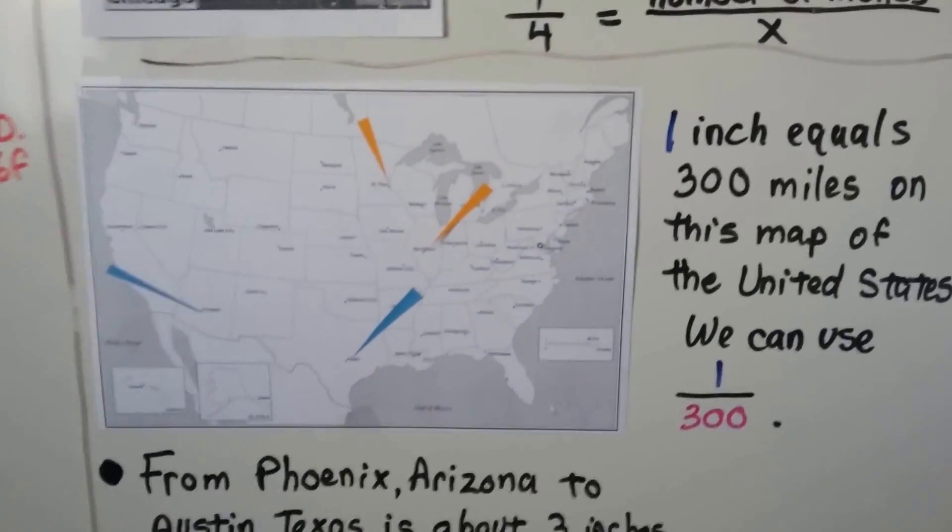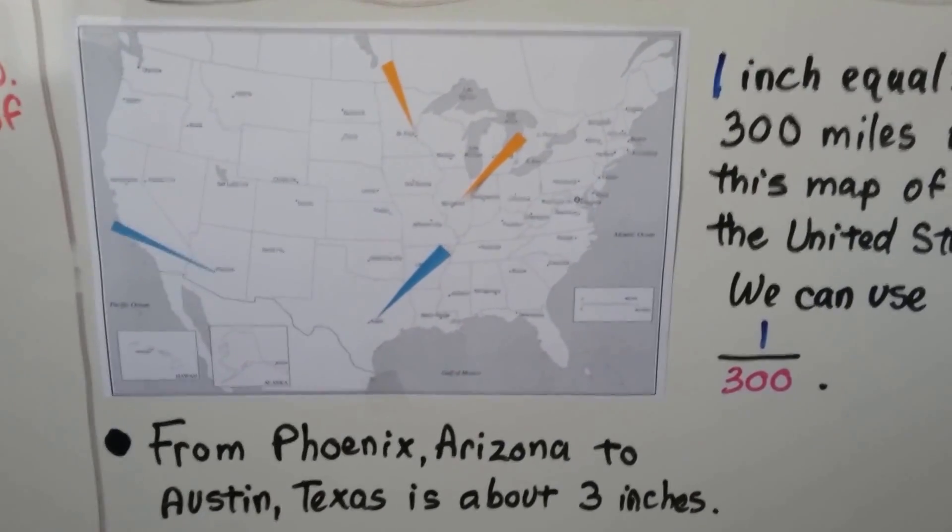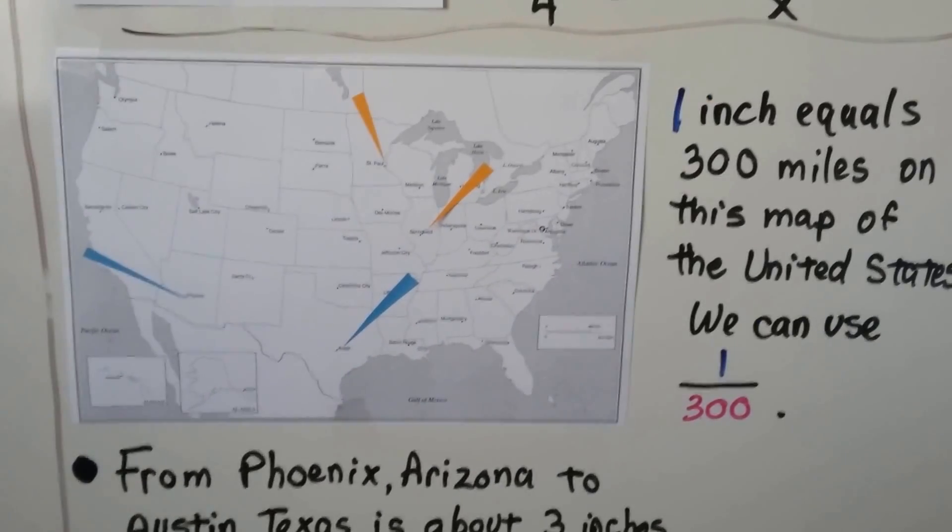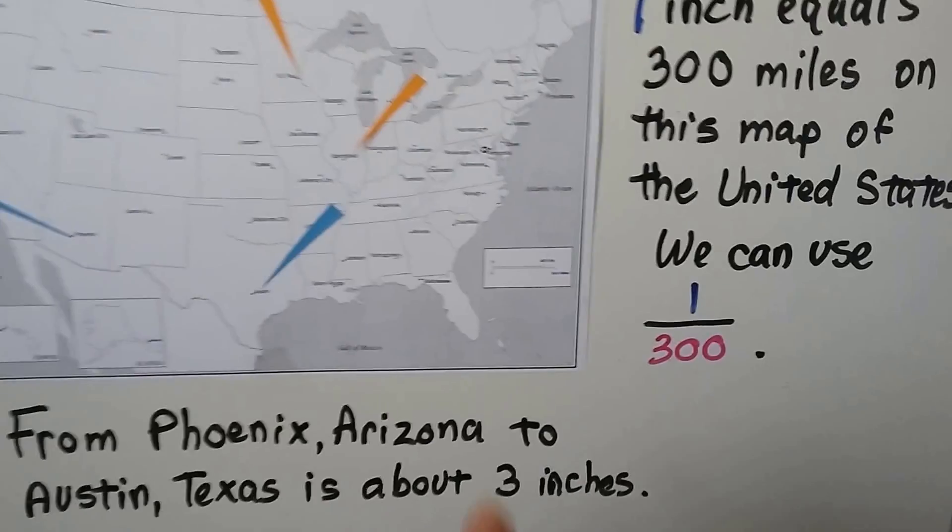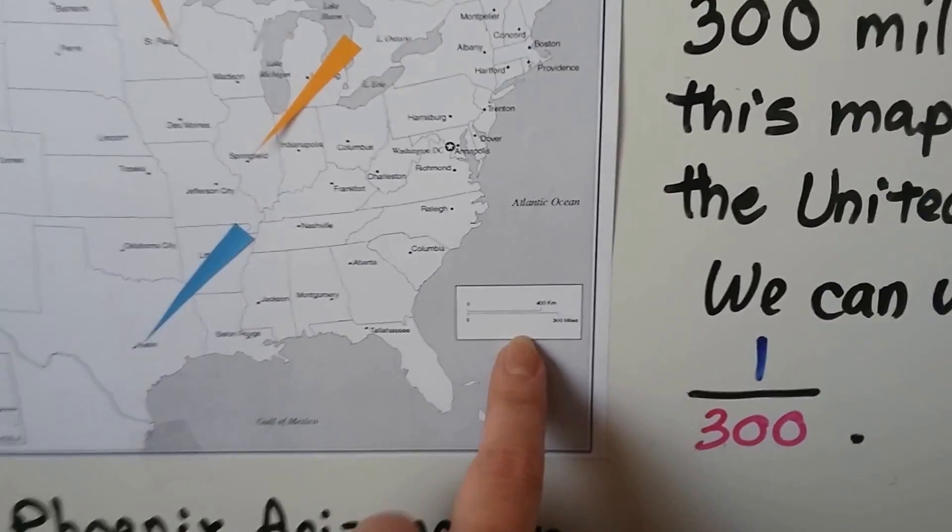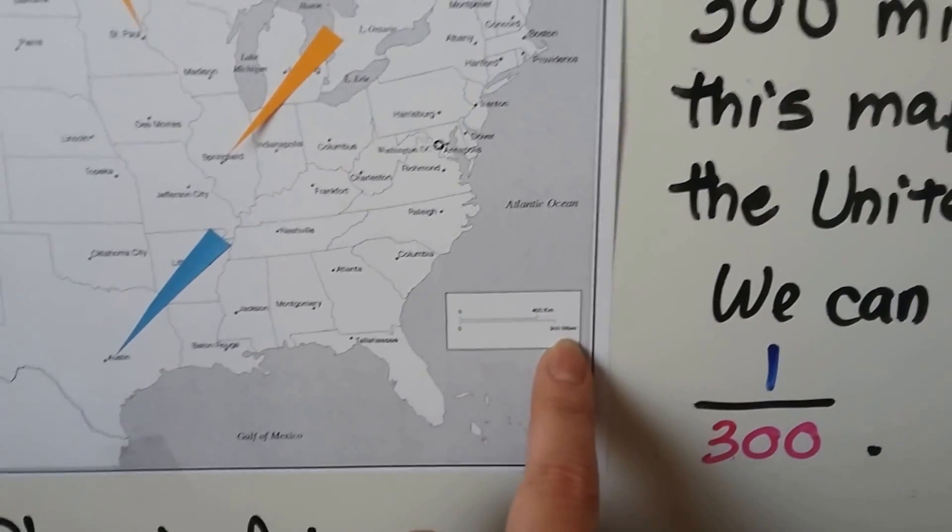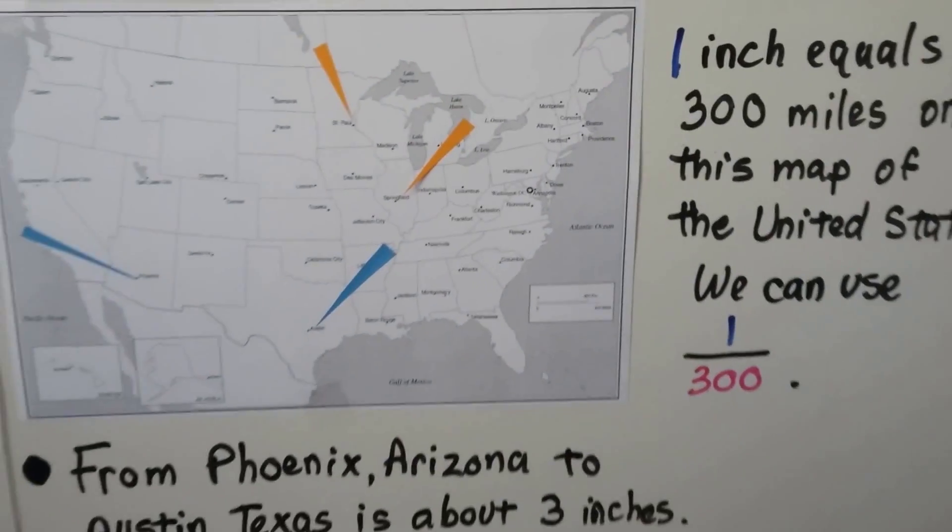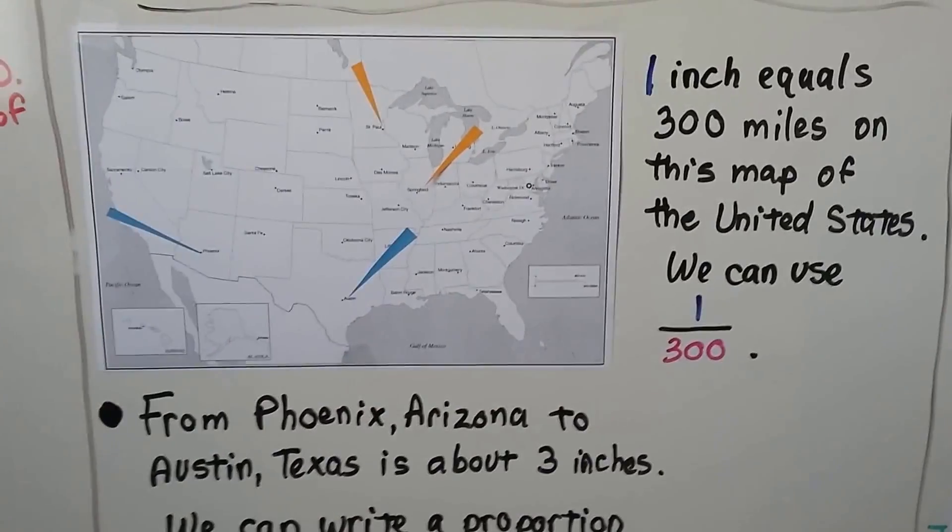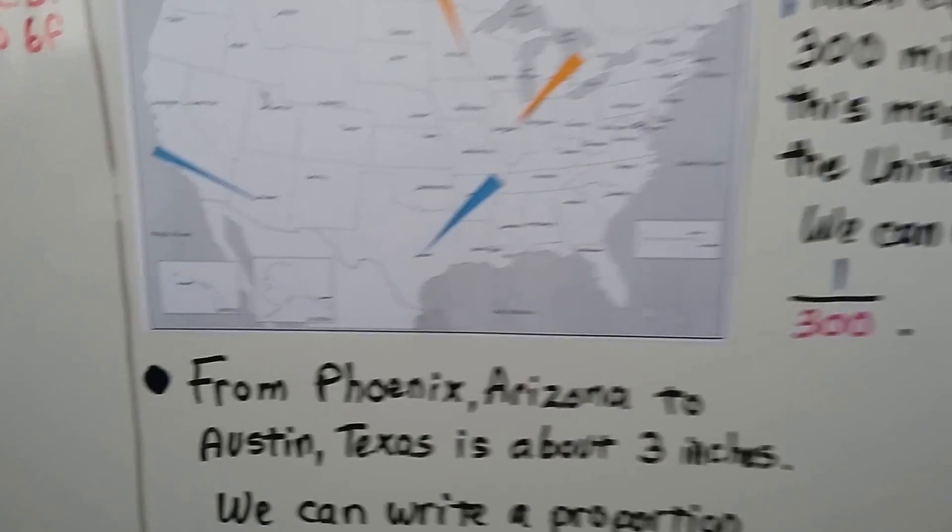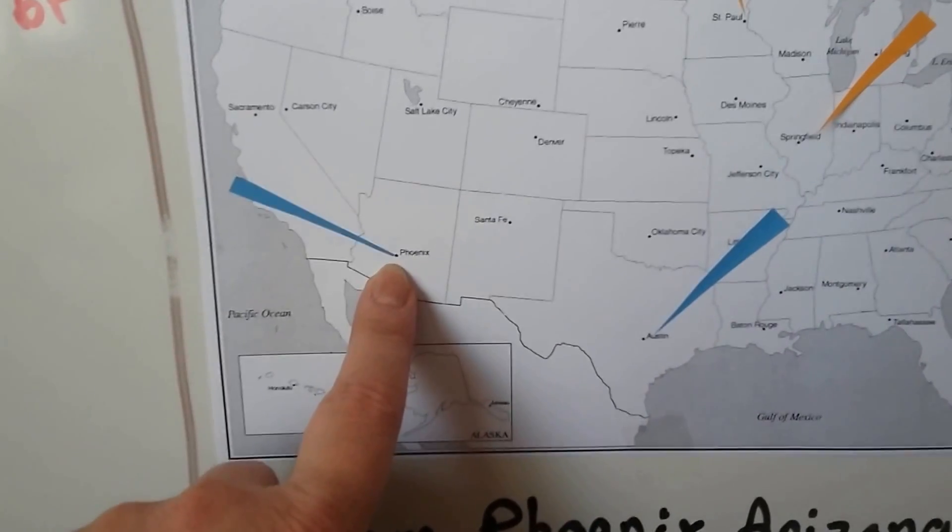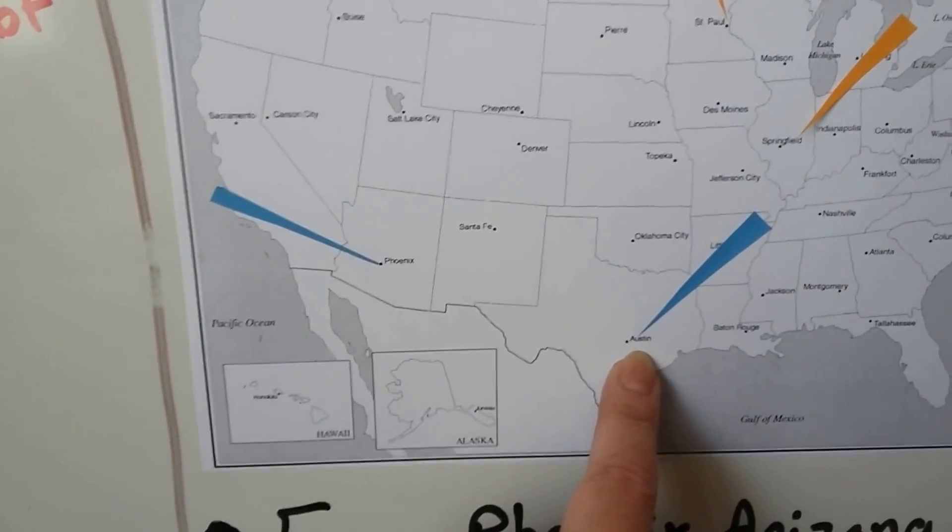Here we have a map of the United States. And one inch equals three hundred miles. It tells us on the scale, right here. One inch is three hundred miles. So we know we can use one three hundredth as our fraction. Right here we have Phoenix, Arizona, and right here we have Austin, Texas.